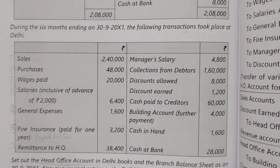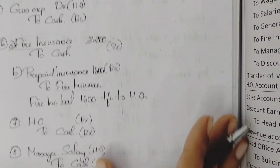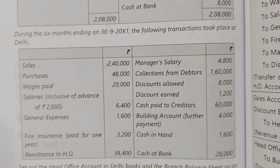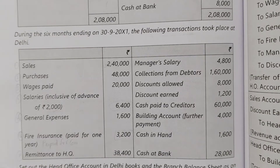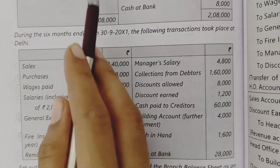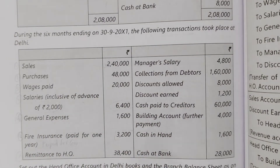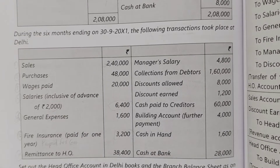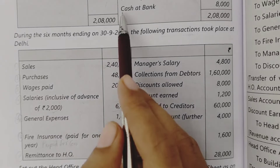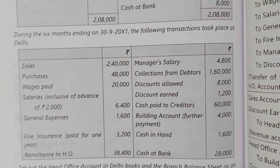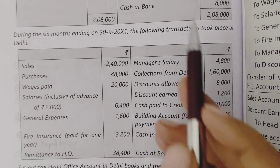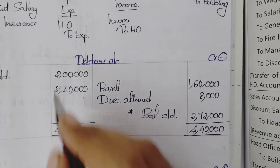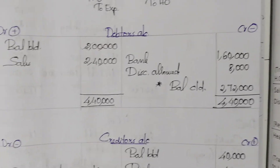We will now prepare the ledger accounts: debtors account, creditors account, cash account — because there are many adjustments involving opening balances, closing balances, and the head office account. Debtors account: opening balance from balance sheet $2 lakhs — balance brought down $2 lakhs. Journal entries are posted directly from ledger accounts; sales are posted to the debtors account.